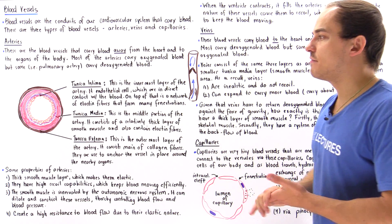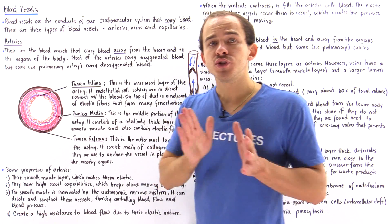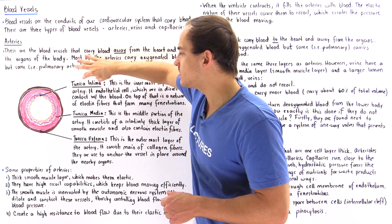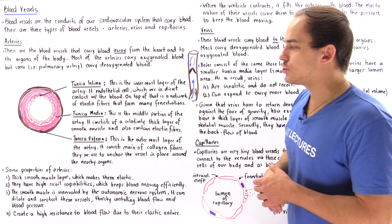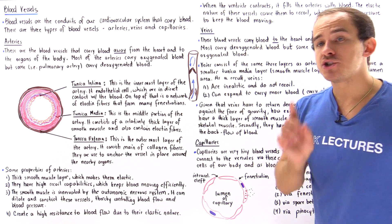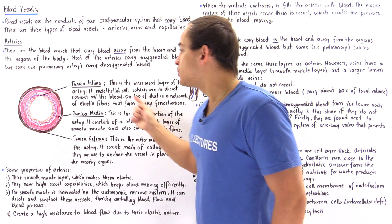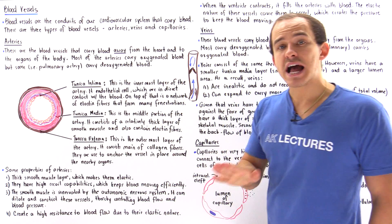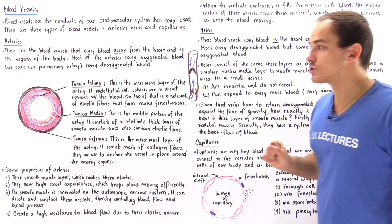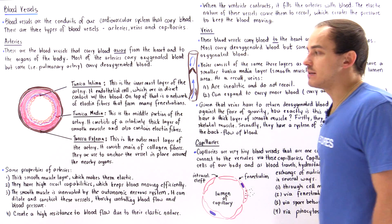What about the anatomy of the veins? As it turns out, veins also have the same three layers — the tunica intima, the tunica media, and the tunica externa. However, veins have a relatively thin tunica media layer because they have very few smooth muscle cells, making this layer relatively thin compared to arteries.